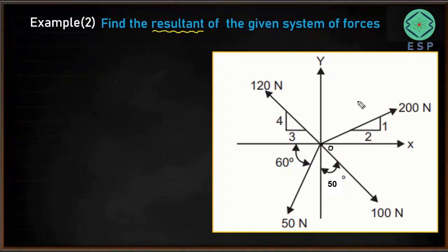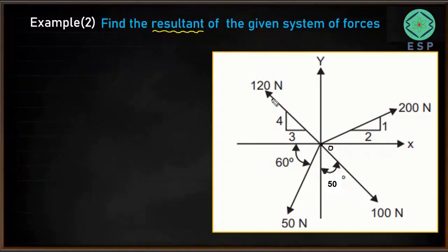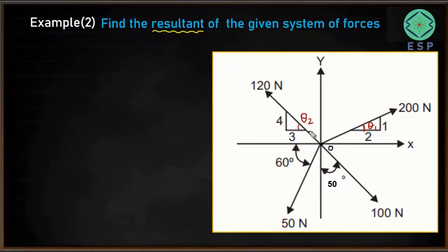To find the resultant of this system of forces, we need to resolve each force along the x and y directions. However, we don't know the angle made by the 200 Newton force with the x-axis, and similarly we don't know the angle made by the 120 Newton force with the x or y axis. So first we need to calculate these angles — let's call them theta 1 and theta 2.